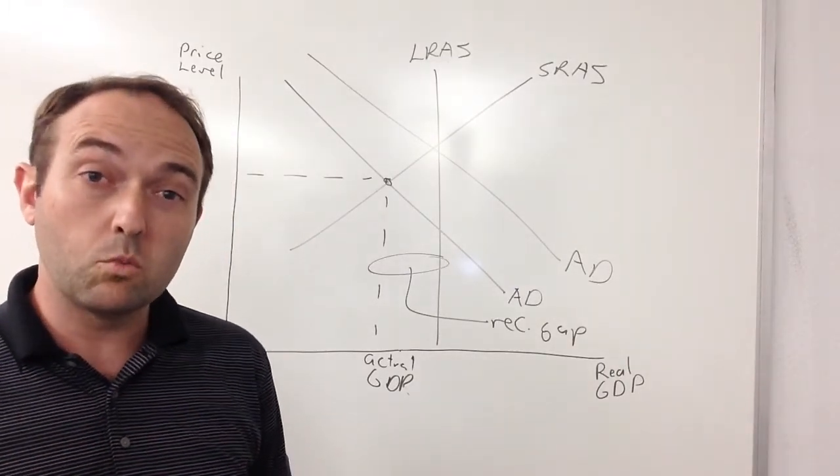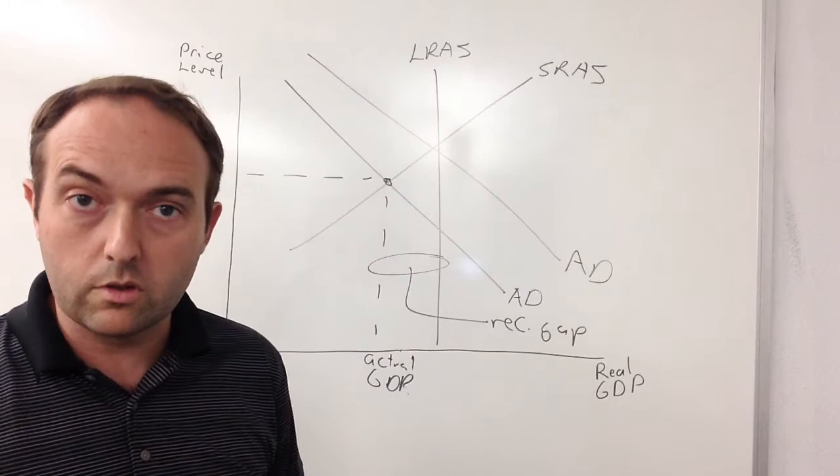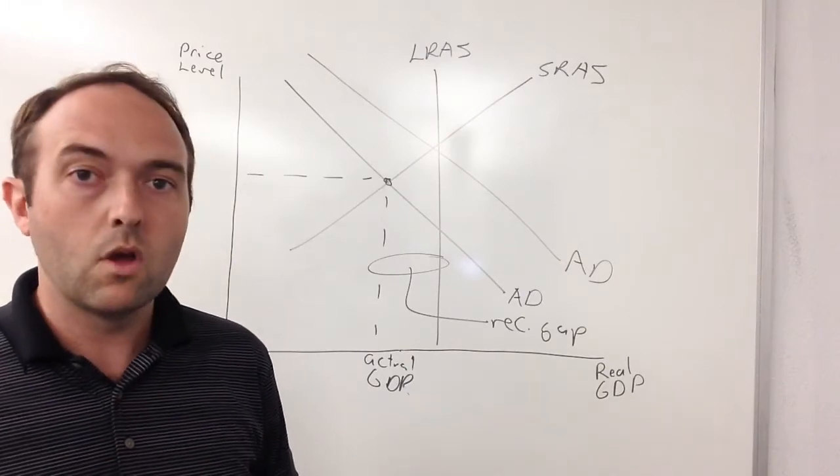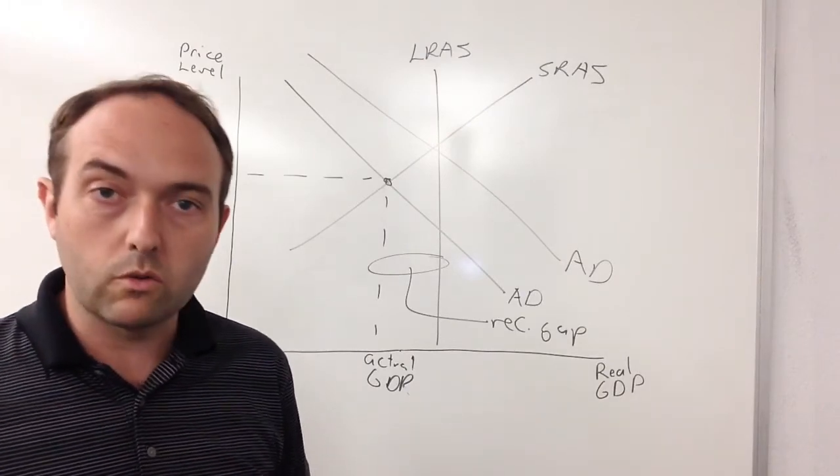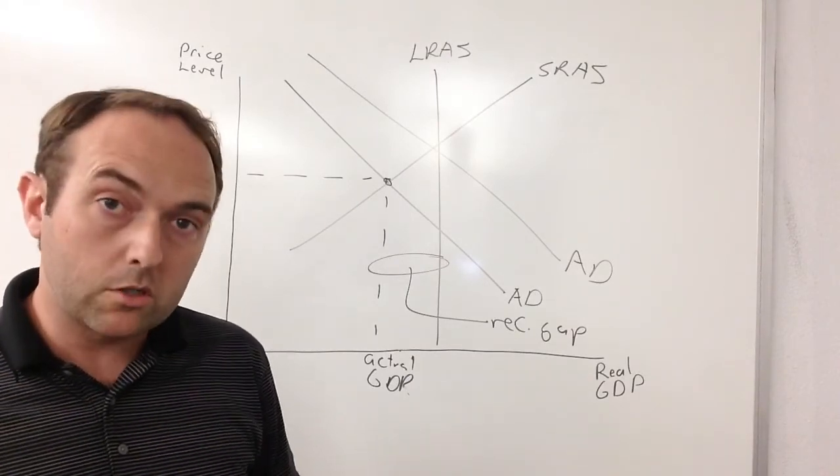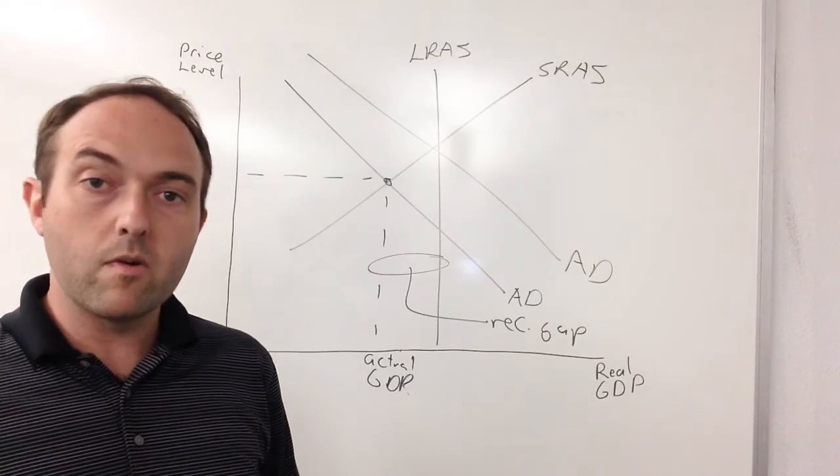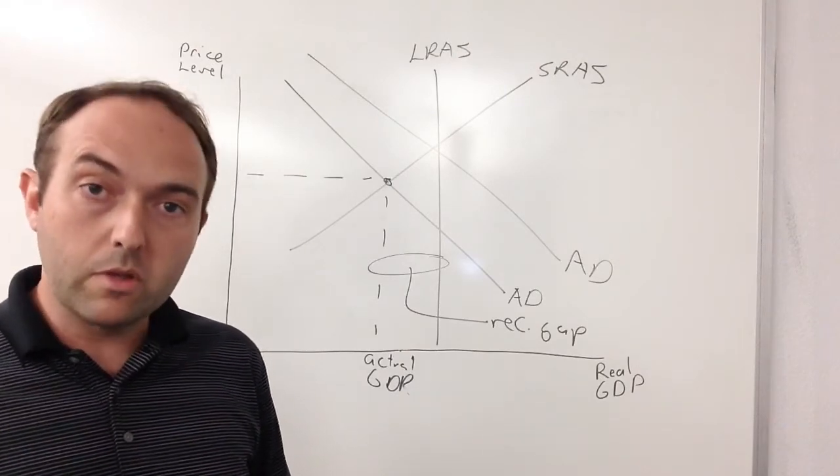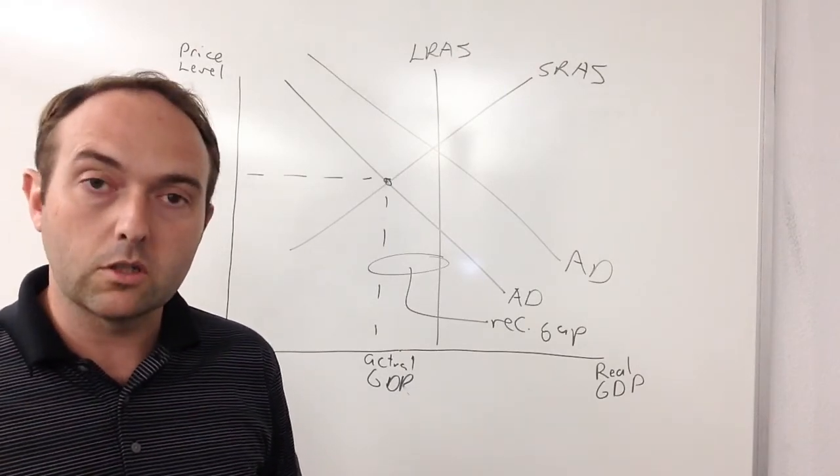First is an increase in consumers' desire to purchase goods. This can happen for a lot of reasons. One of the major things would be an increase in wealth. You could also see this kind of shift happen if you have an increase in government purchases or an increase in the amount of investment that businesses make to expand their production capabilities.